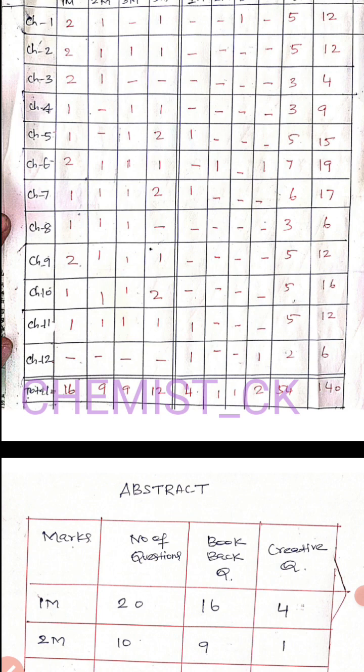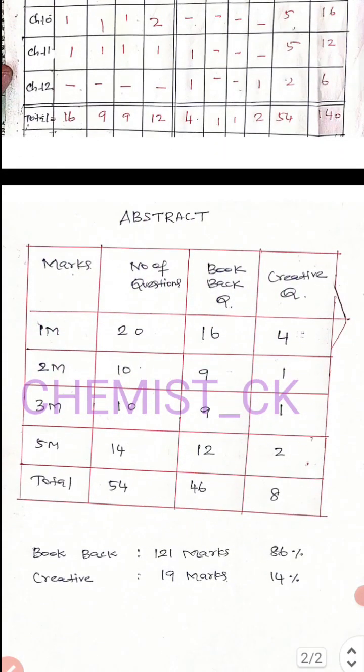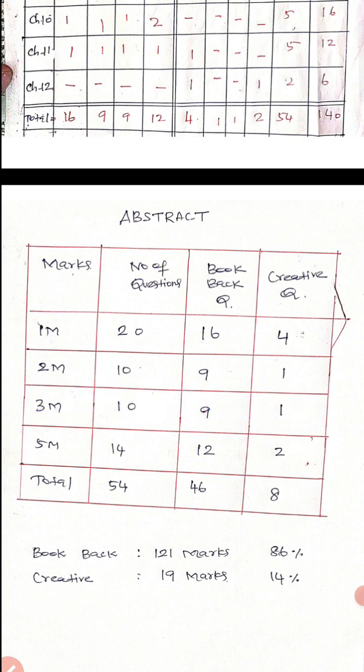What are the totals? One mark is 16, 2 marks is 9, 3 marks is 9, 5 marks is 12. The total is 55 questions. It's 8 points, with 6 of that. This point is 8. If you look at the book bag, you can get 121 marks — that's 86%.